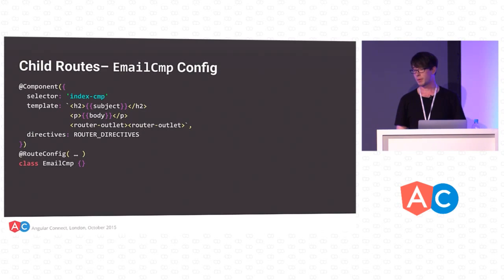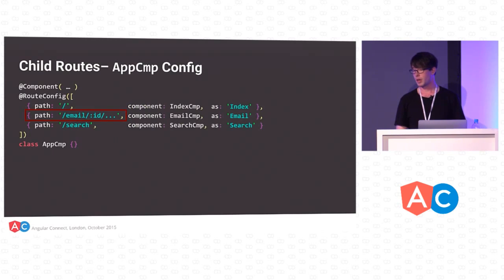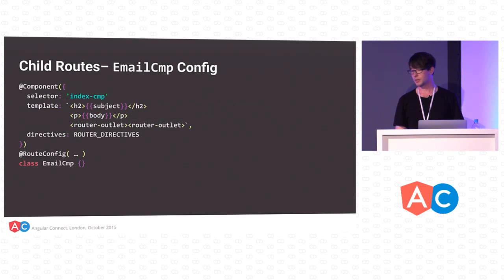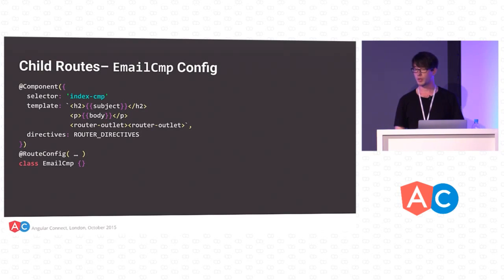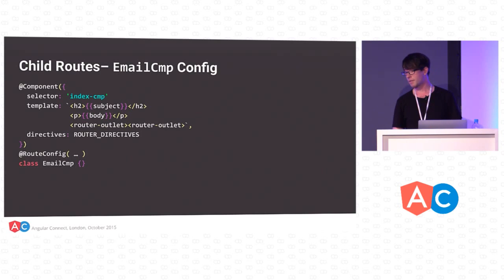Child routes allow you to encapsulate different nested structures while still reusing existing parts of your app. To add this feature, we refactor our email component and split it into two child routes: the thread view and the file view. File takes an ID and thread doesn't take anything — it just shows all the messages. Here's what our email component looks like: note that we add a router-outlet, and we have a RouteConfig. At the app component level, if you want a component with a child route, you denote that using dot-dot-dot notation.